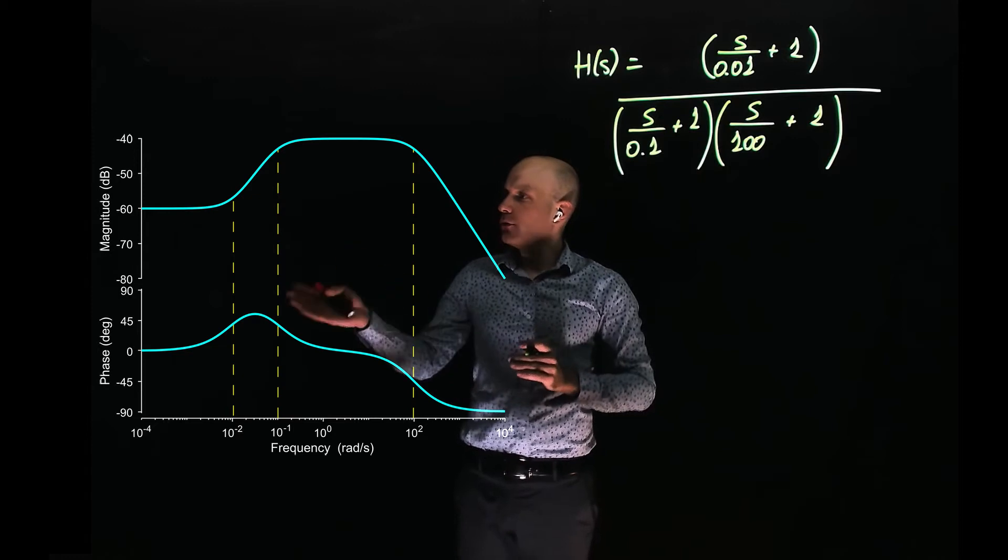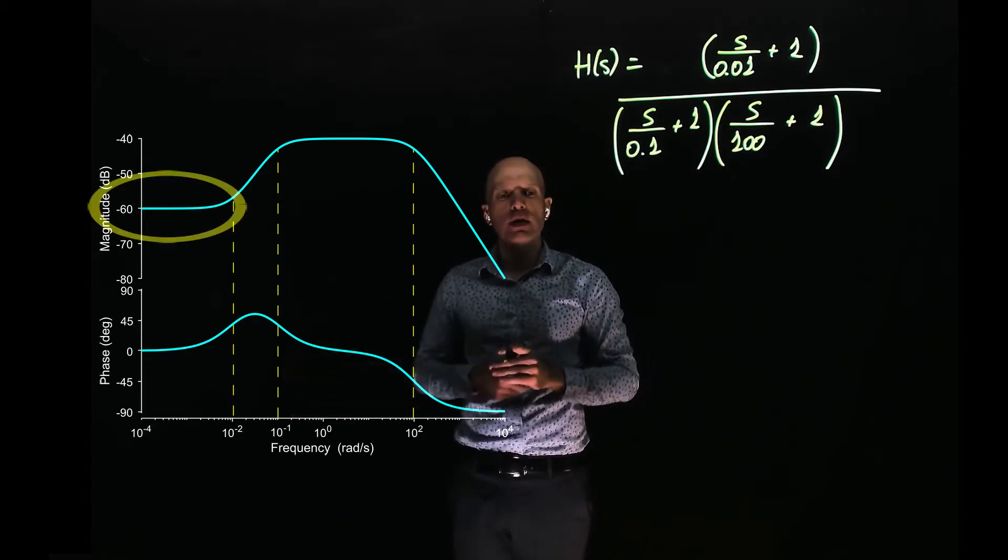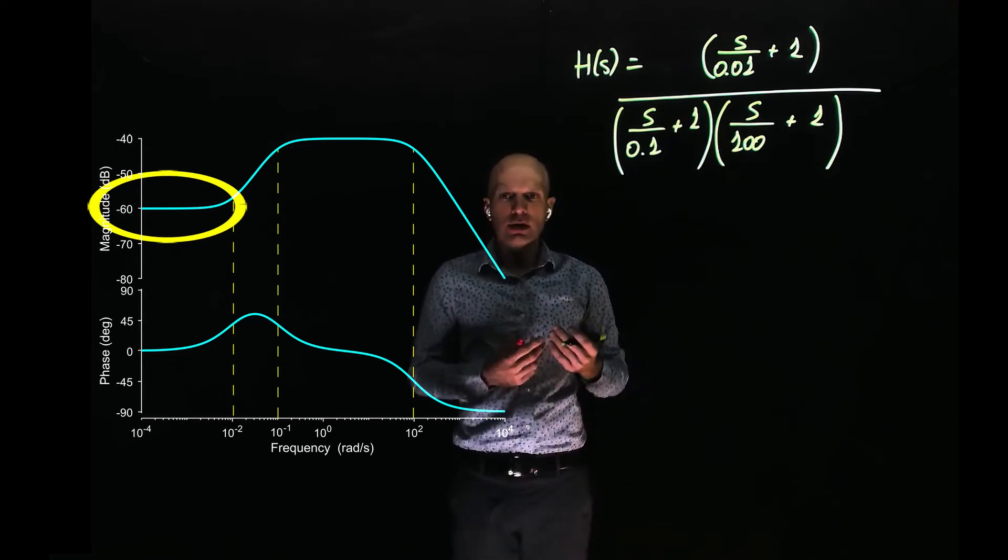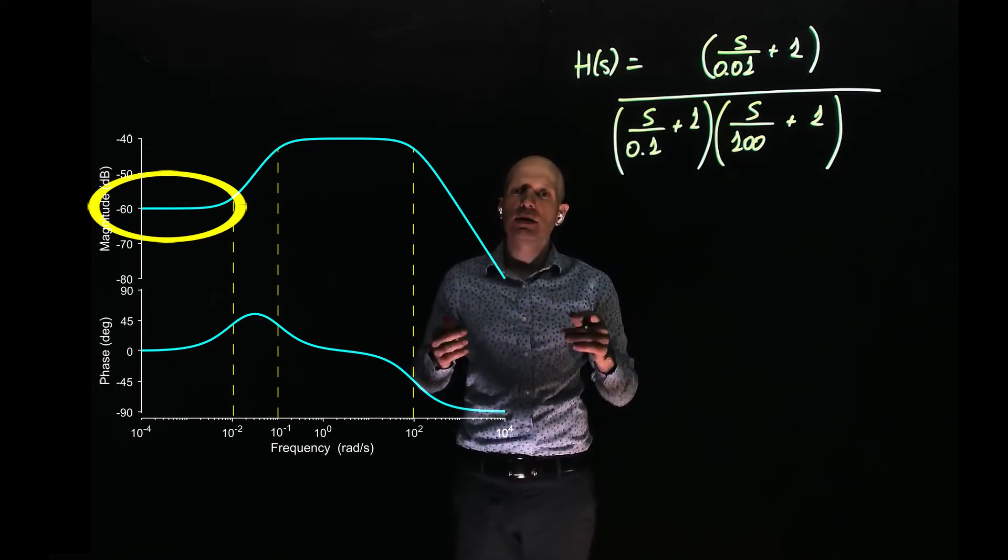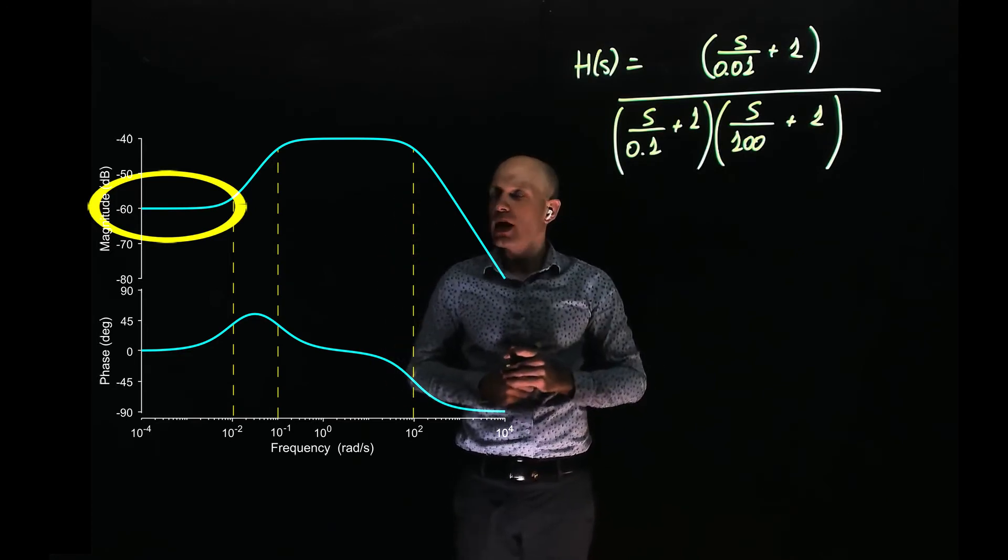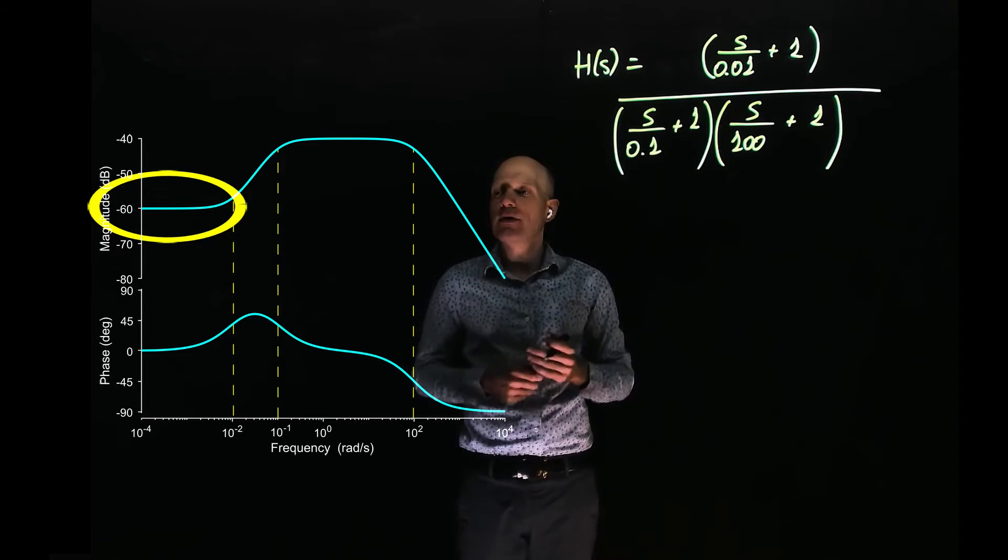Well, if you look at low frequencies, you are not at zero. At low frequencies, we are at negative 60 decibels. This indicates that a flat line indicates that there is a gain somewhere pushing the entire Bode plot down, and it's bringing us to negative 60 decibels. What is that value?